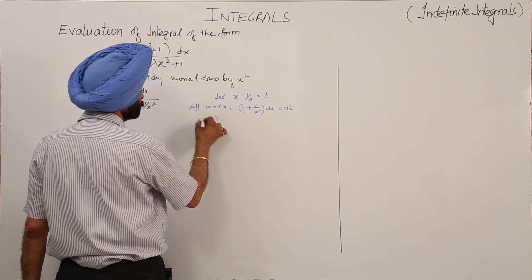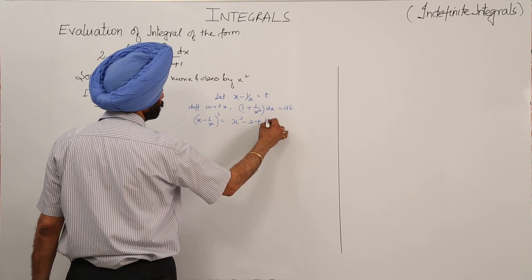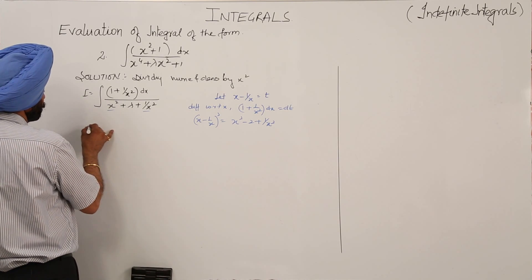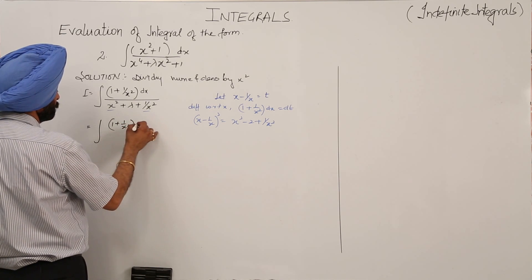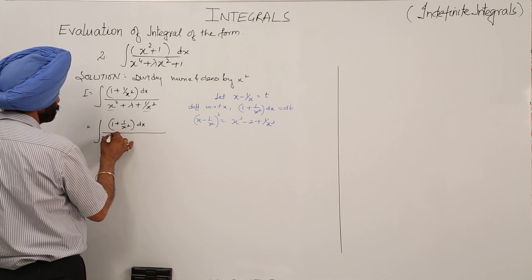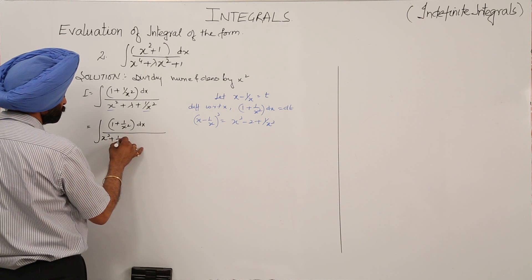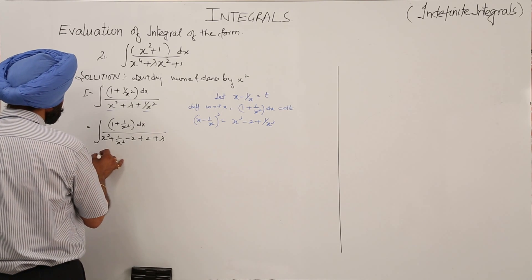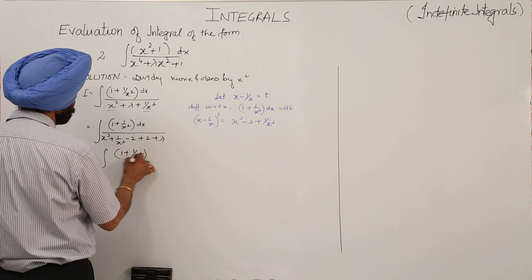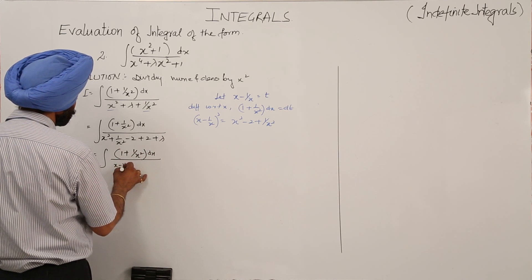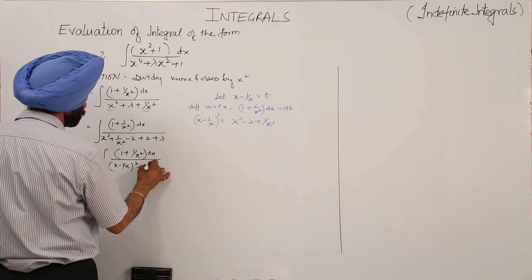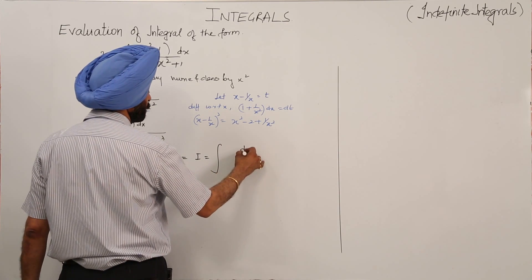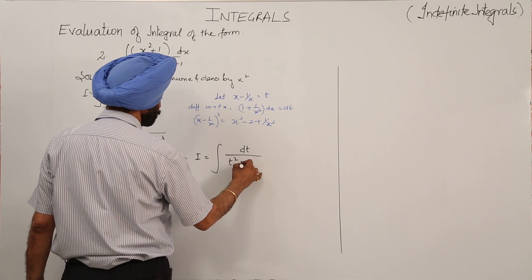Now in the denominator, if we square (x - 1/x), we get x² - 2 + 1/x². Since x² and 1/x² are already there, we write the denominator as x² + 1/x² - 2 + 2 + λ, which equals (x - 1/x)² + 2 + λ. So the integral converts to dt upon (t² + 2 + λ).